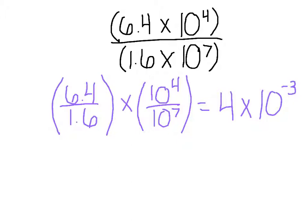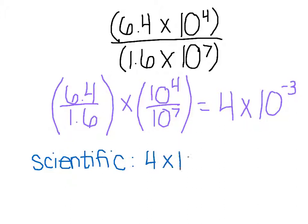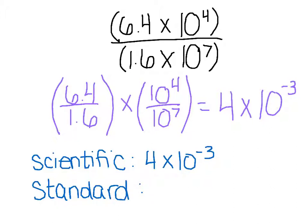Hopefully you're saying yes. So in scientific notation, my answer is going to be 4 times 10 to the negative 3rd. Then we also need to write it in standard notation. Therefore, I'm going to move my decimal 1, 2, 3 spots to the left, and I get 0.004. This is proper standard and scientific notation.